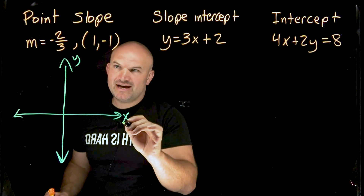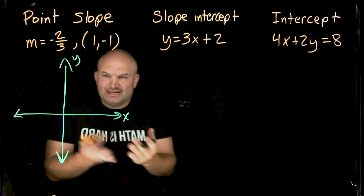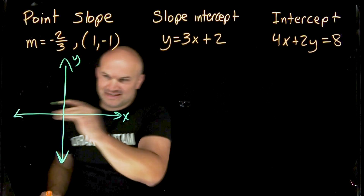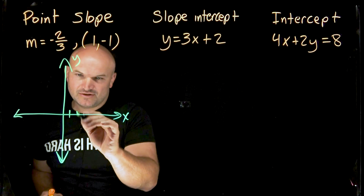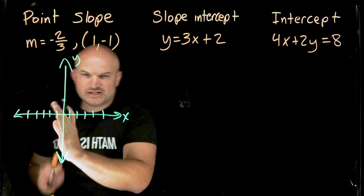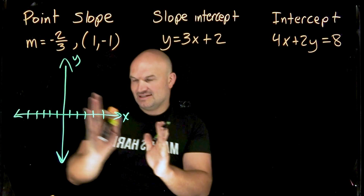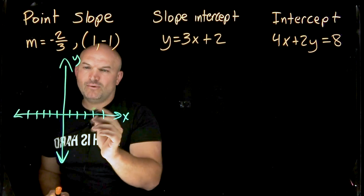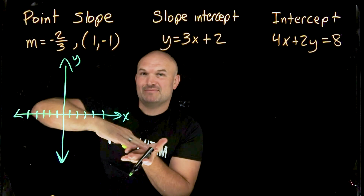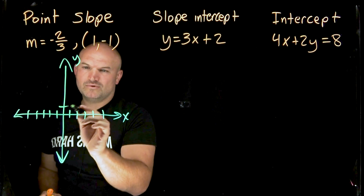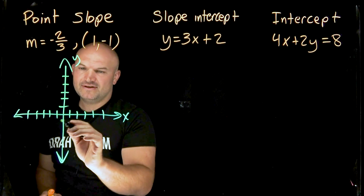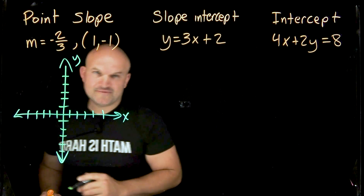Assuming you have a basic idea of how these number lines are oriented: the x-axis goes horizontally with positive direction to the right and negative to the left. The y-axis is the same number line flipped vertically, where going up is positive and going down is negative.